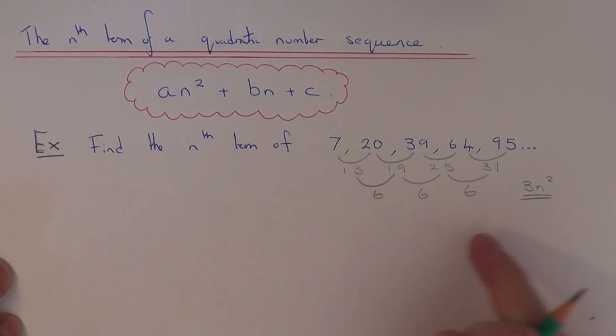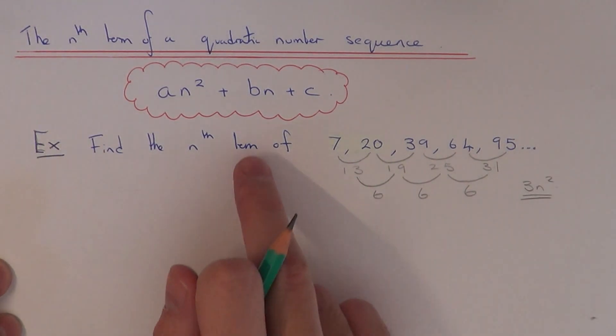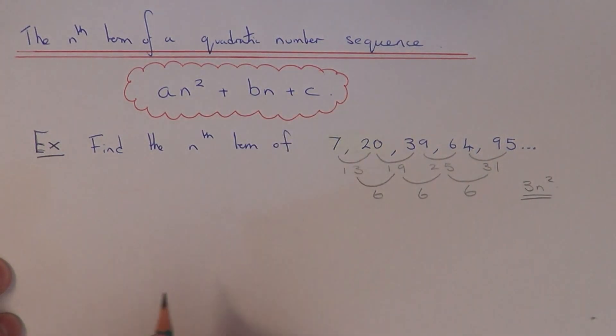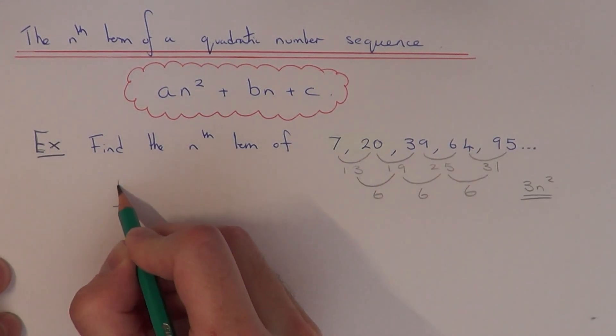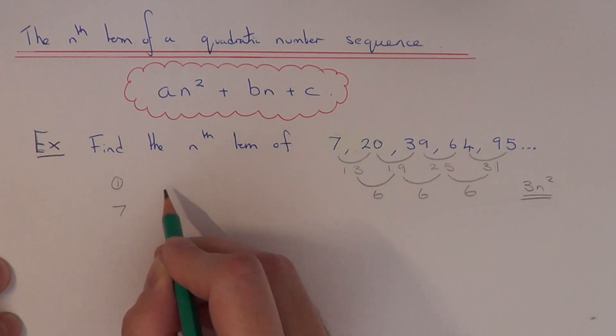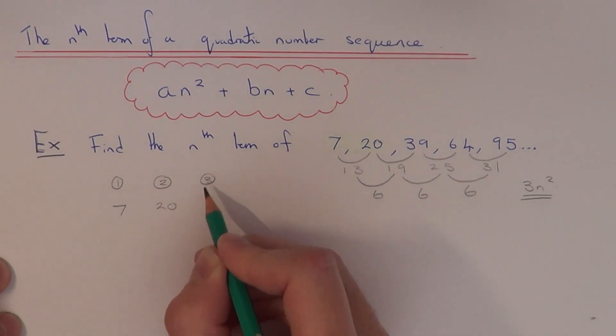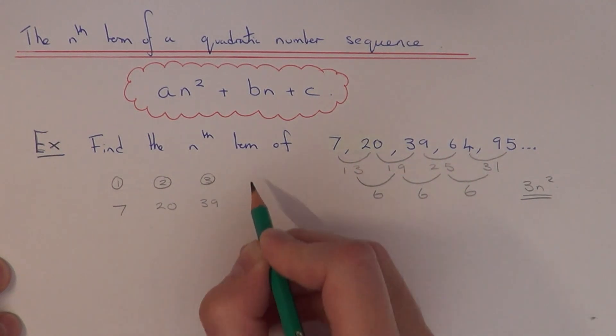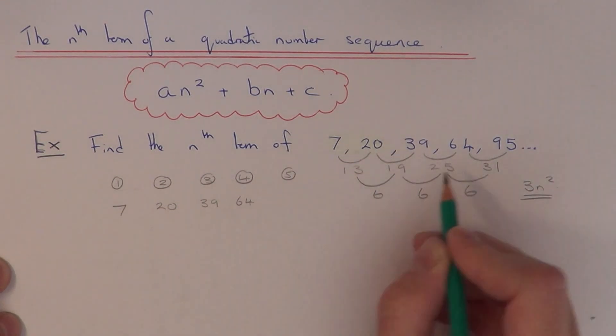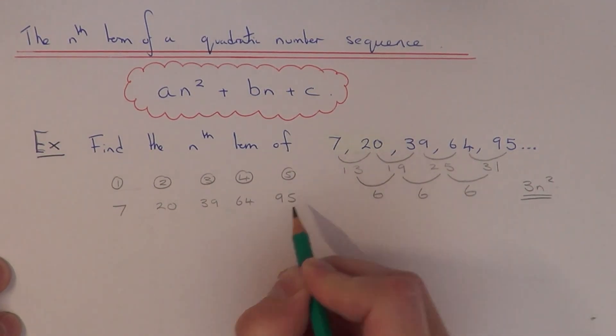So I'm now going to use this to figure out the values of b and c now. So let me just copy down our sequence one more time. So our first term was 7. Our second term was 20. Our third term was 39. Our fourth term was 64. And our fifth term in our sequence was 95.